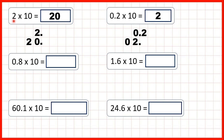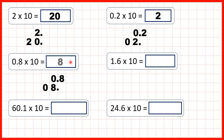Notice: when we had 2 ones times 10, we got 2 tens as our answer, and when we multiplied 2 tenths by 10, we got 2 ones as our answer. So what's 0.8 times 10? We can write out the decimal, copy down the decimal point. We're multiplying by 10, so the digits are going to move 1 square to the left. If we copy down this 0 and this 8 one square to the left, we now have the decimal point at the end, so we have a whole number — that's 8.